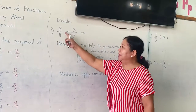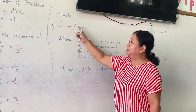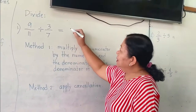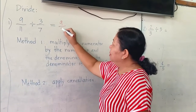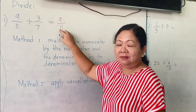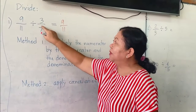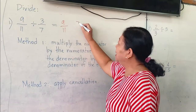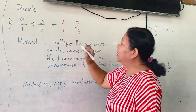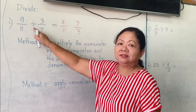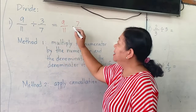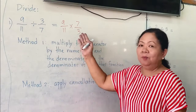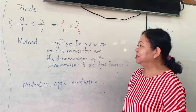Here, I have nine over eleven divided by three over seven. First, you will write the same fraction — the first fraction, write as it is. But the second fraction, you will get the reciprocal. So you will write here seven over three. And you will change division to multiplication. Now, you will multiply the fraction by the fraction.